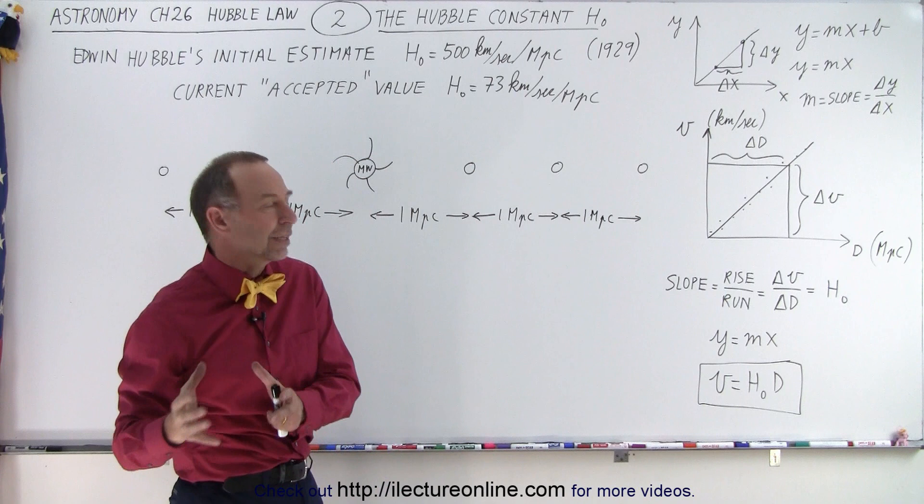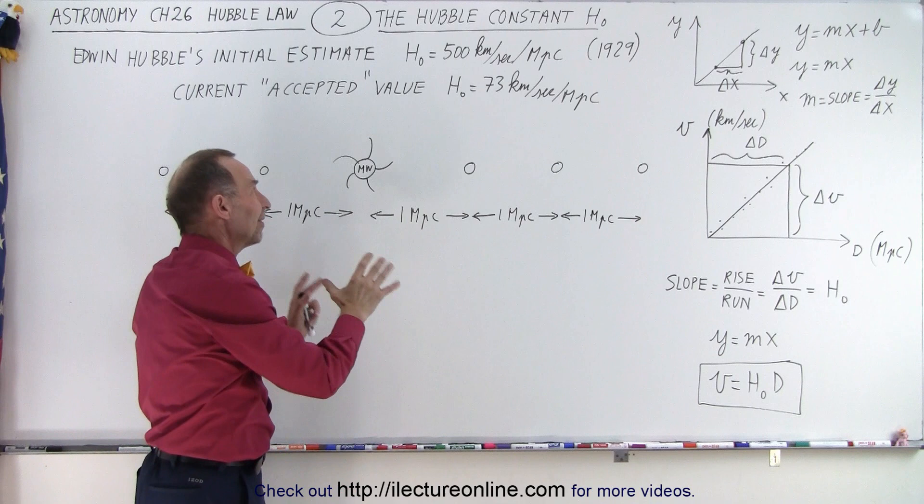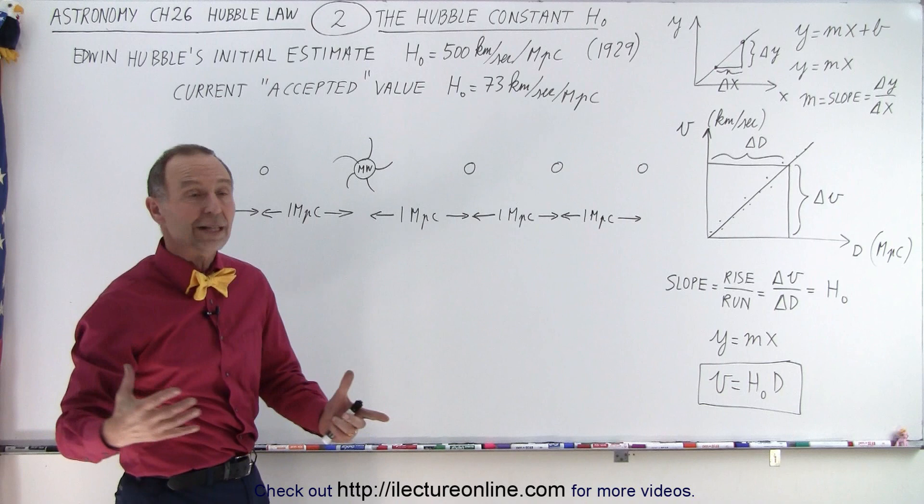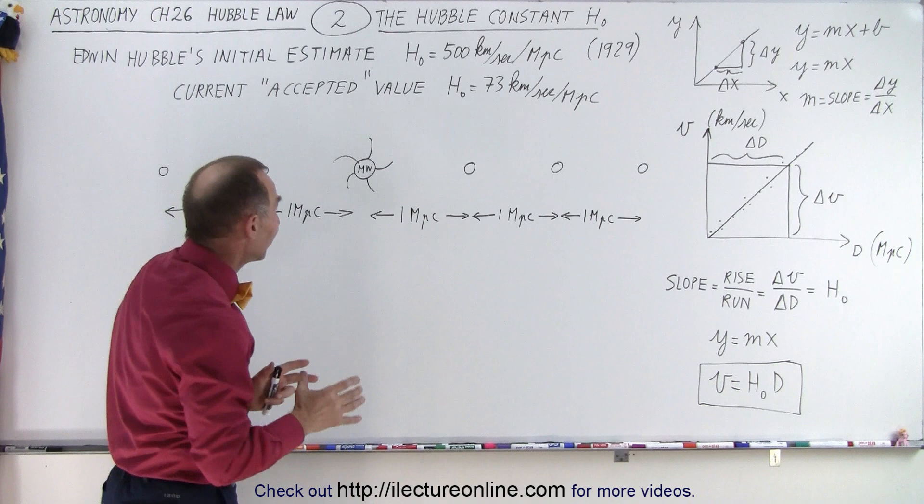The problem of course is that accurate value for the Hubble constant. Notice that the initial estimate was 500 kilometers per second per megaparsec. The current accepted value is about 73 kilometers per second per megaparsec, but it's still changing on an almost monthly basis. We've already had thousands of attempts to try and come up with an accurate value for the Hubble constant and we're still looking for that value.